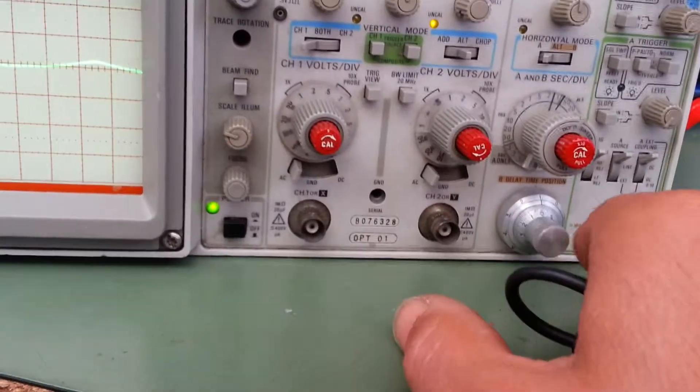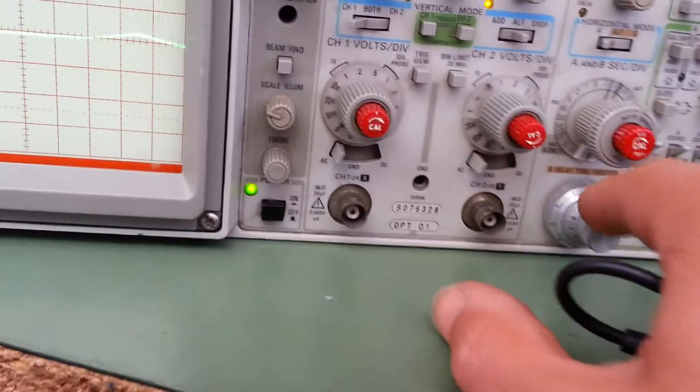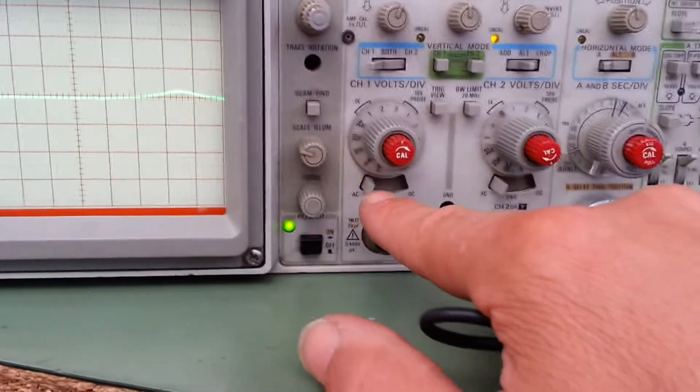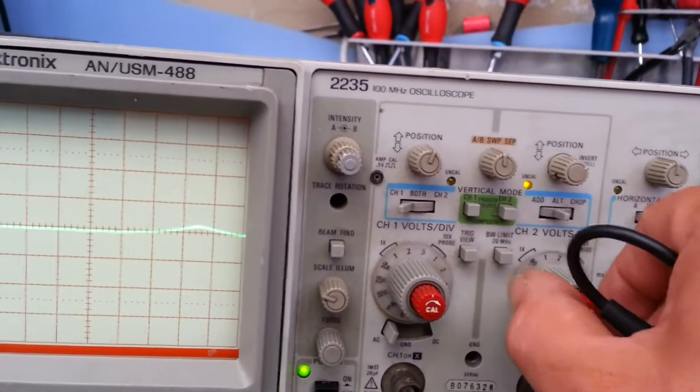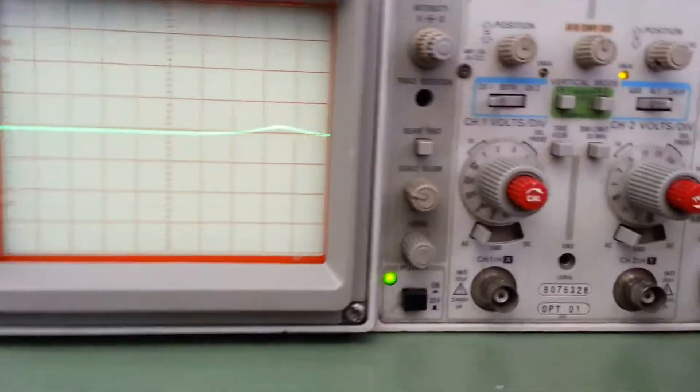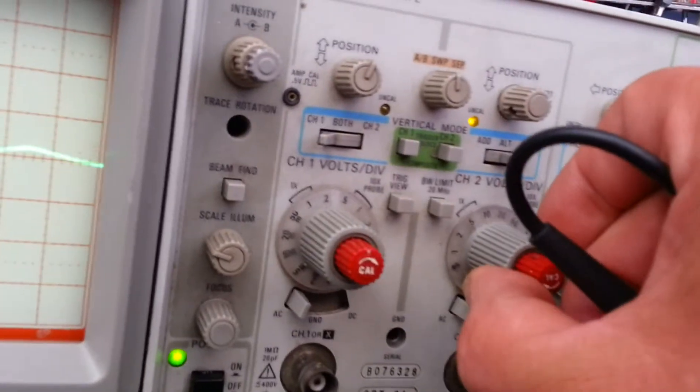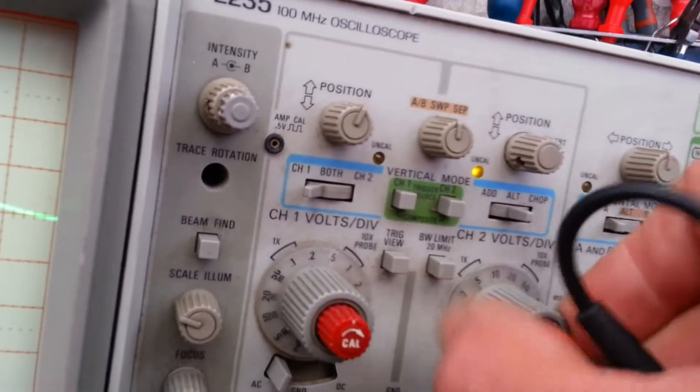As I say, it's got the delay time base here with a nice vernier type control here. All AC-DC coupling on the scope as you'd expect. It goes down to quite a low volts range I seem to remember on these. Trying to work out the display here.